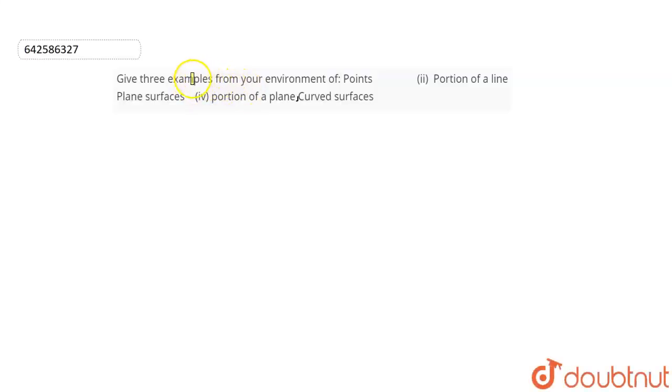Okay, so the question we have is: give three examples from an environment of points, portion of a line, plane surfaces, portion of a plane and curved surfaces.